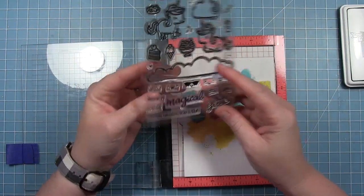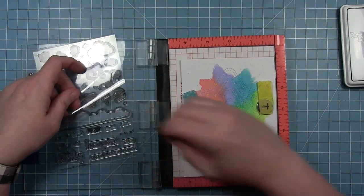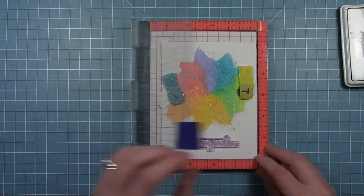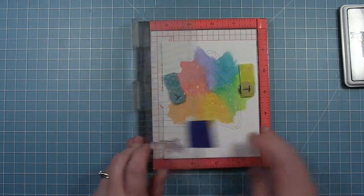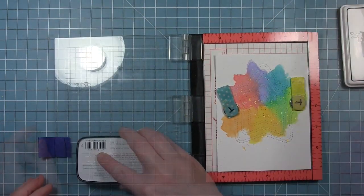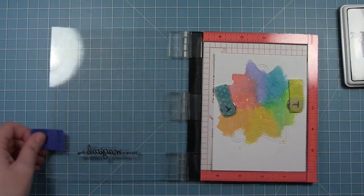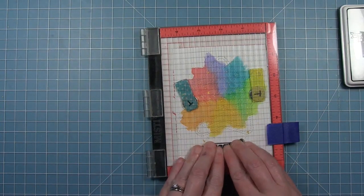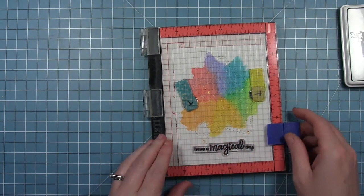Now that my background's all finished I'm going to stamp my sentiment and I'm stamping a sentiment from Unicorn Picnic that says have a magical day. I'm just going to put it in my Misti tool and stamp it down so I know that it's nice and straight and I can put a little extra pressure or re-stamp if I need to because I'm on that watercolor paper that has a little bit of texture to it.